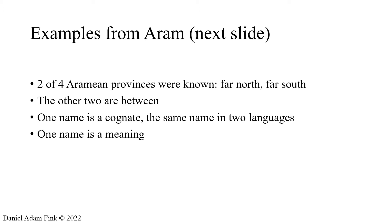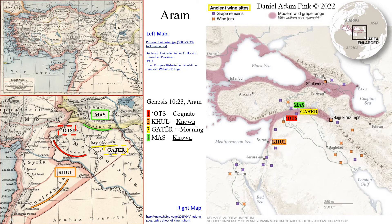I'm going to be showing you Aram and Egypt. Two of the four Aramean provinces were already known — the northern and southern provinces. The two which had been missing for centuries were in between. One name is a cognate, which is the same name in two languages like Tejas and Texas, and the other is a name meaning. You can see my additional tutorials for longer explanations, but in a nutshell: